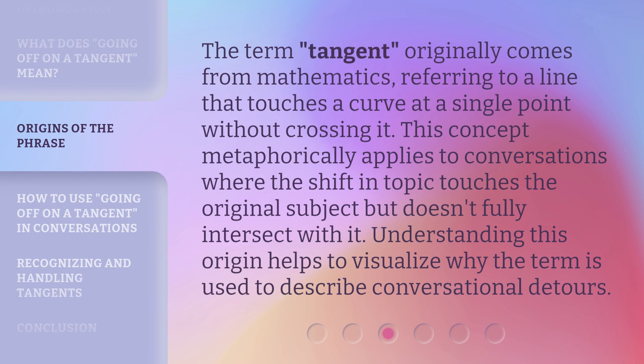The term 'tangent' originally comes from mathematics, referring to a line that touches a curve at a single point without crossing it. This concept metaphorically applies to conversations where the shift in topic touches the original subject but doesn't fully intersect with it. Understanding this origin helps to visualize why the term is used to describe conversational detours.